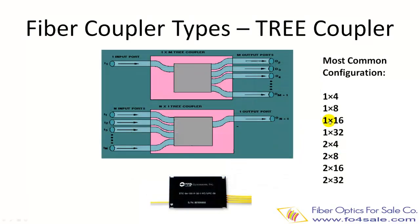Tree couplers are also called 1xN couplers because they take one or two inputs and split it into multiple outputs. Tree couplers distribute the input power equally among all output fibers. Most common configurations include 1x4, 1x8, 1x16, 1x32, and 2x4, 2x8, 2x16, 2x32 port ratios. Tree couplers have been extensively used to split and mix optical signals in CATV, LANs, and all other kinds of optical communication systems.